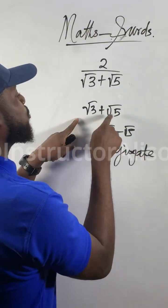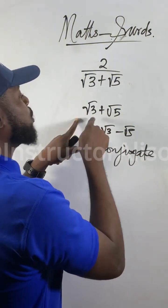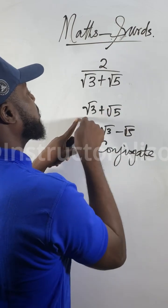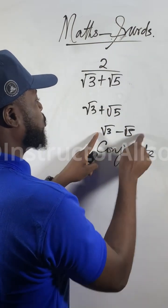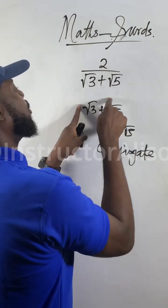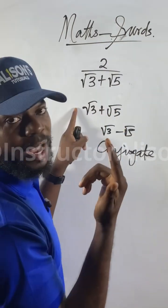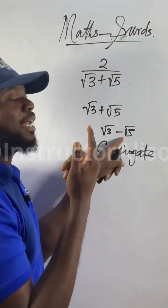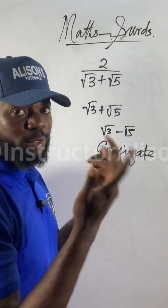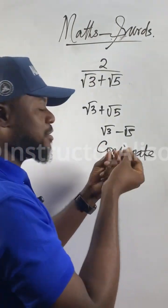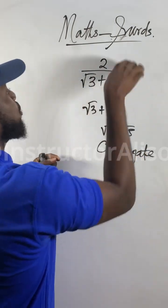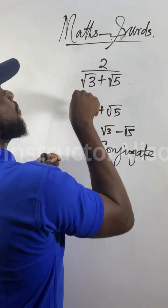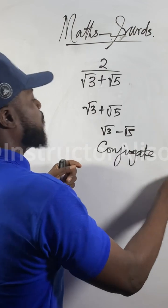If I give you root three plus root five, will the conjugate of this be root three minus root five? See the answer — if I ask you, will it be the conjugate of this one? Now the sign has changed — that is the conjugate. So when I say rationalize, I mean to multiply this thing by the conjugate of the binomial.